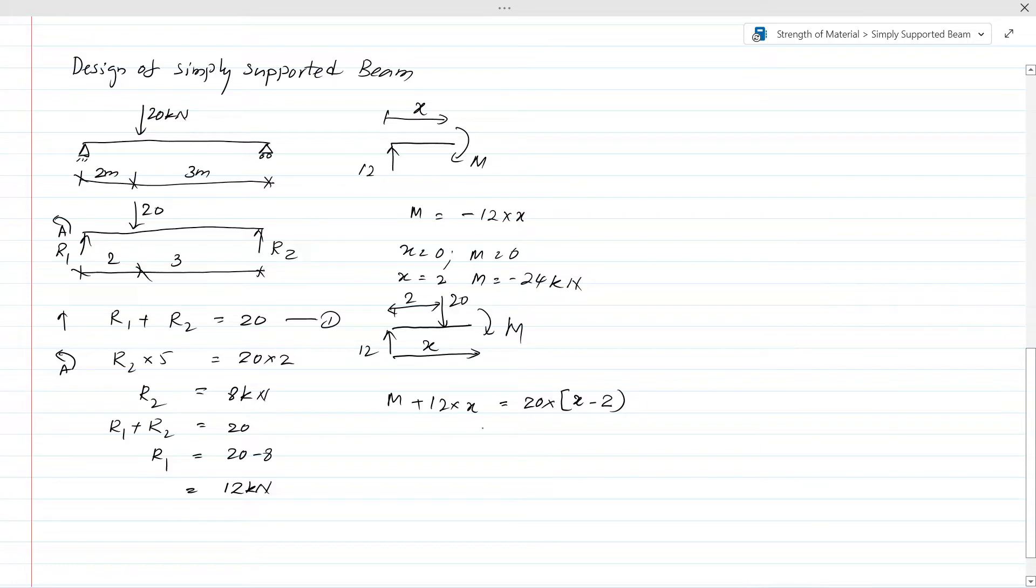Now we can write the equation for M: 20x minus 12x minus 40, which simplifies to M equals 8x minus 40. From this we can find the bending moment at the point load and at the support.